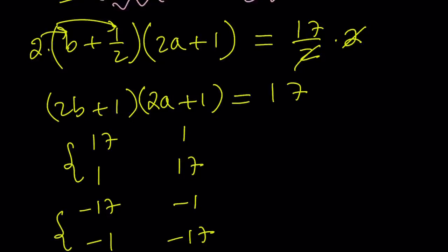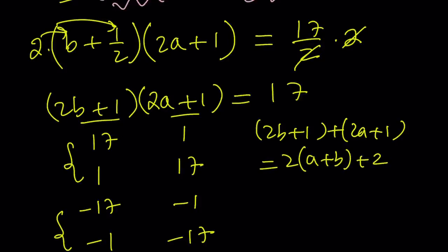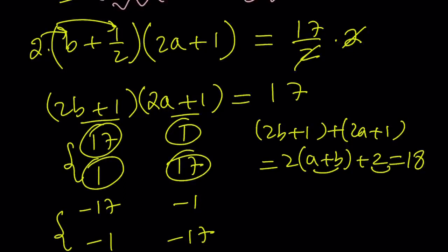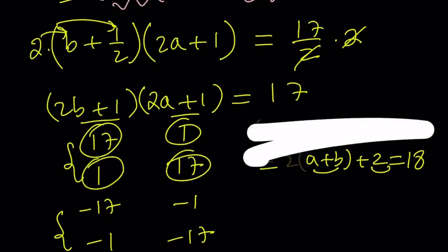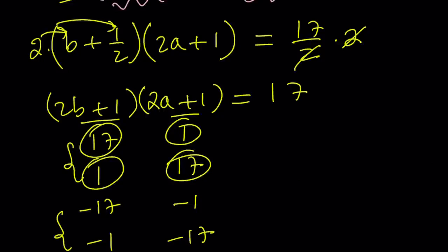So you could also verify that by adding these two terms. 2b plus 1 plus 2a plus 1 gives you 2 times a plus b plus 2. And we know that it's always 17 plus 1 for these cases, and that's going to be 18. And if you subtract 2 and divide by 2, you'll get the answer. So that wouldn't matter if you just use one of them. Having said that, let's go ahead and take a look at this one and this one, since it doesn't matter.